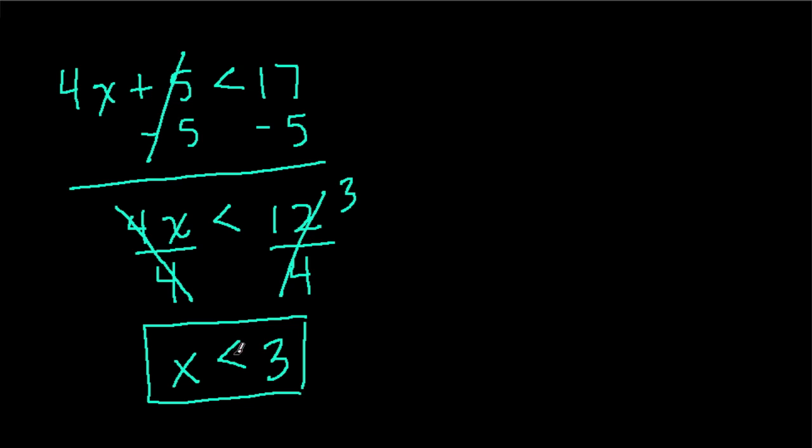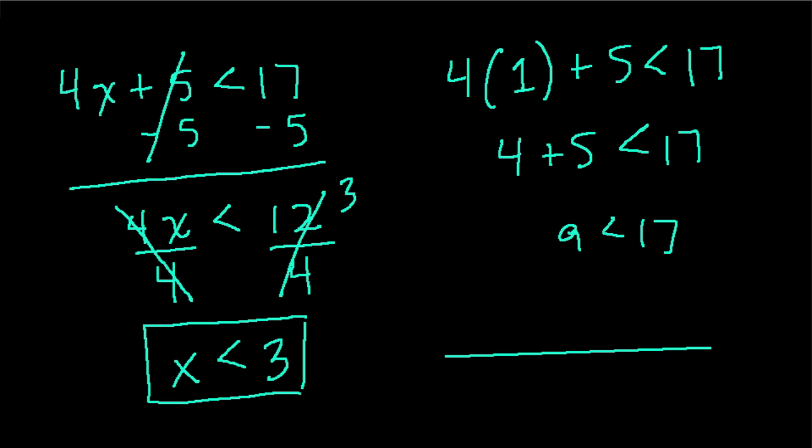So that means any value of x less than 3, plug it in here and it works. For example, 4 times 1, that's less than 3, plus 5 will be less than 17. 4 times 1 is 4, plus 5 is 9, and that is less than 17. So that works. And we can even graph this. x is less than 3. When we graph that, we're basically graphing all values that can be plugged in to our equation here that will actually work. So x has to be anything less than 3. So open dot, line to the left. That means anything less than 3 will work in this equation.